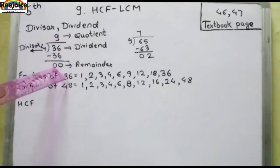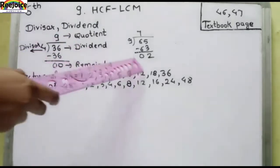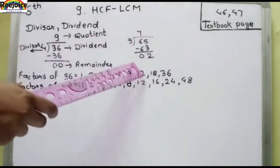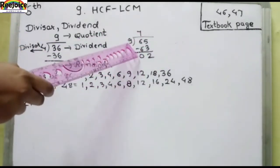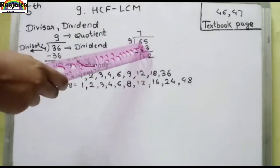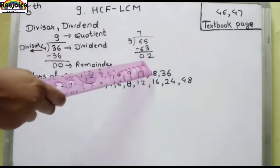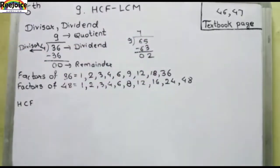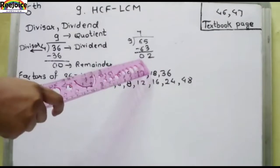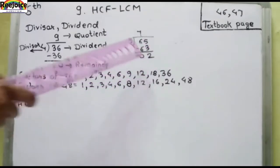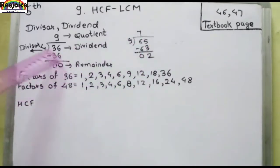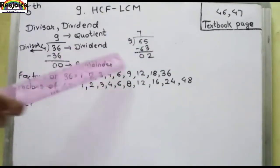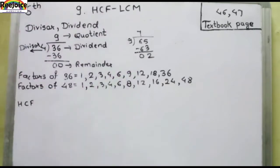यहाँ पर अपने एक division देखा है, यहाँ पर भी एक division लिखा है। इसमें है 9 divisor, 65 dividend, 7 quotient, और 2 remainder। पर इसके अंदर 2 बच रहा है, इसके अंदर कुछ नहीं 0 आ रहा है, मतलब यह perfect division है।